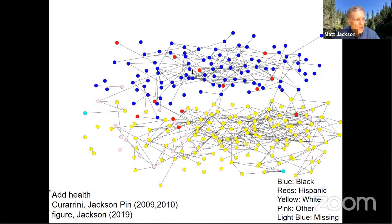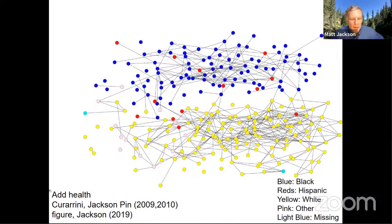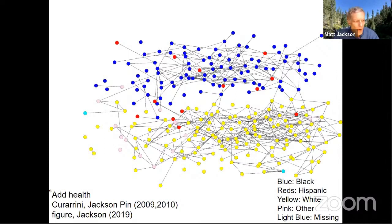The Hispanics are actually a fairly small subset of the school, so they end up being fairly well integrated. Generally, when you look across this dataset — 84 high schools for which we have good data — within those high schools, students who are very small minority groups integrate well, but larger groups tend to split apart.